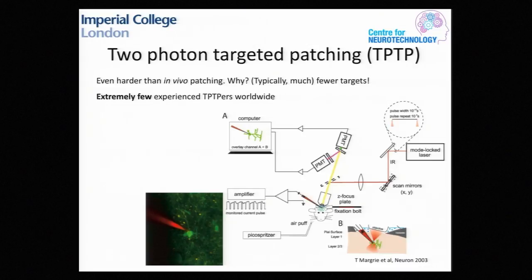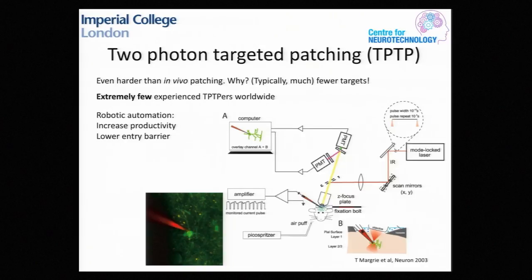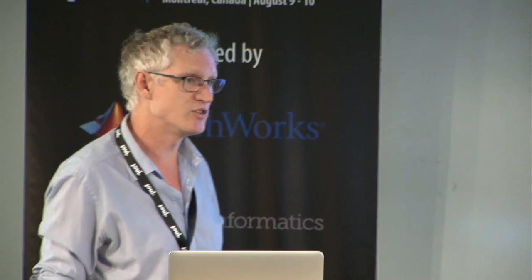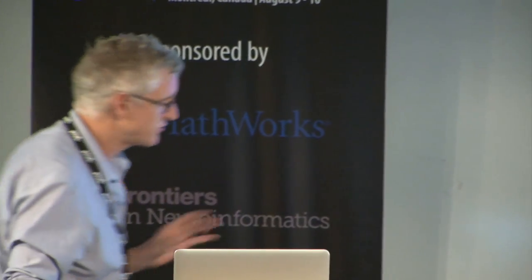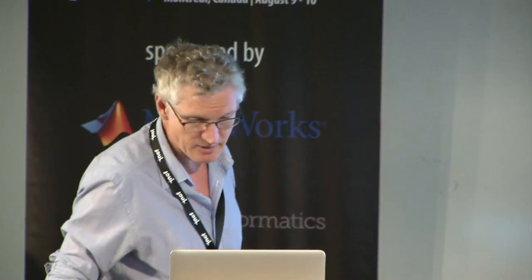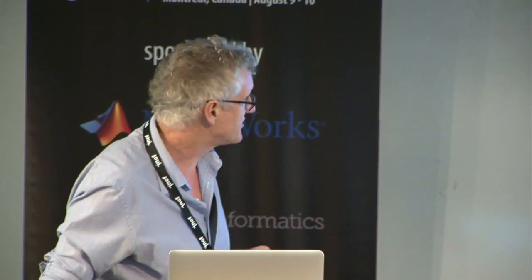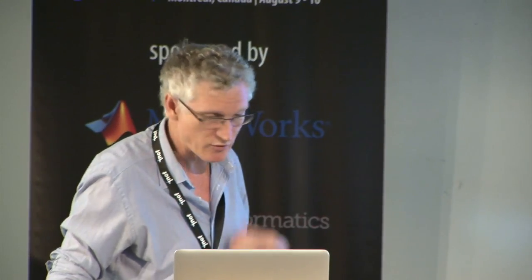This has limited the dissemination of the technique. One of the things we set out to do was use robotic automation to increase productivity and lower the entry barrier. We were motivated by a paper from Ed Boyden's group by Suhaza Kondar-Ramaya, who had automated blind in vivo patching. We looked at this and said, maybe we can add a two-photon targeting layer to that. Our initial thoughts were quite naive — we thought we could just select a target and move down in the brain. It turns out there's a crucial technical problem to solve. But basically, robotic technology seemed at least a way to overcome some of this dissemination barrier.